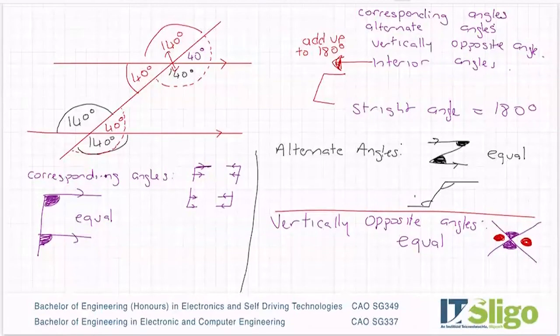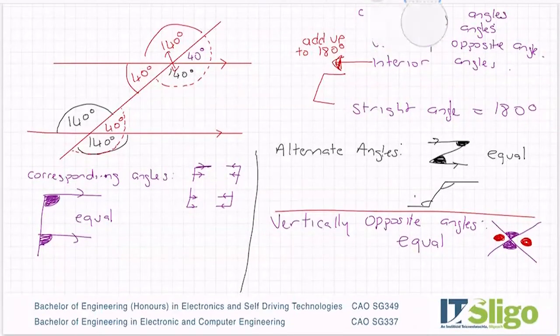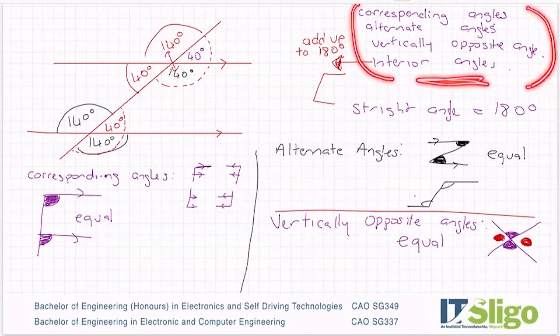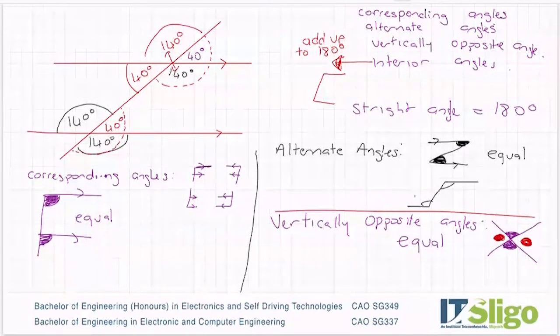So these are the tools in your toolkit. Corresponding angles, alternate angles, vertically opposite angles, and interior angles that you use to solve geometry questions and where you have to either show that a triangle is equal or you have to figure out angles. But it's a mixture of these. You're always trying to spot these in that section. So very important. You know your F's, your Z's, your X's, and your interior angles.